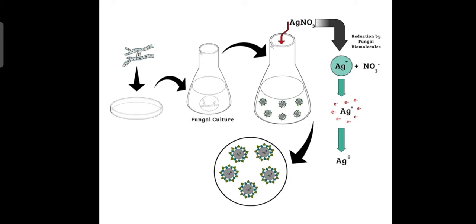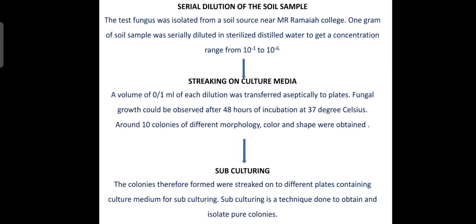Using the mass culture media, we will filter, and to that liquid we will be adding silver nitrate. Here the reduction occurs with the help of fungal biomolecules. The elemental silver will be formed, and it makes the nanoparticle which is produced with the help of fungal extract to be a potential one.